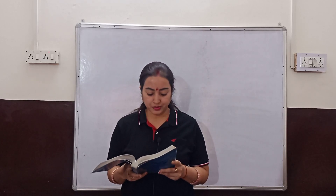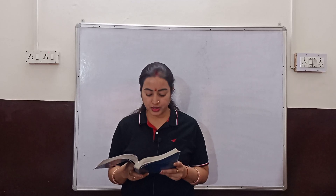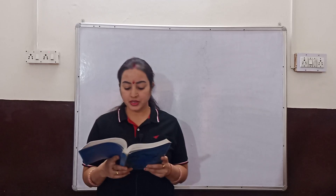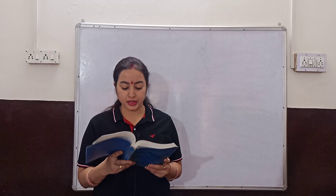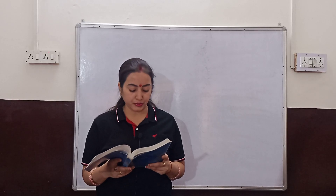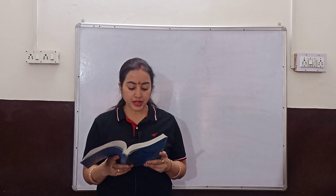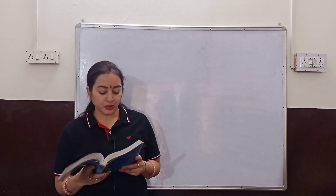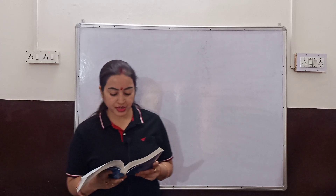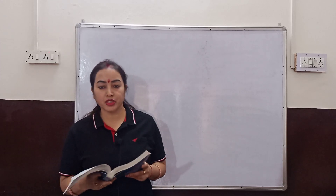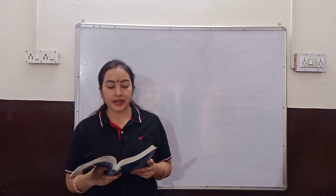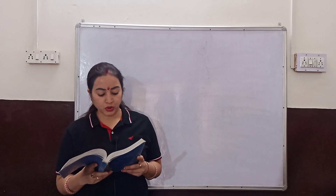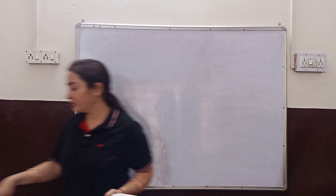The curved surface area of a circular cylinder of height 14 cm is 88 cm². Find the diameter of the base of the cylinder. The curved surface area is 88 cm², height is 14 cm, and you have to find the diameter of the base.